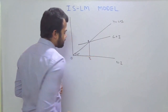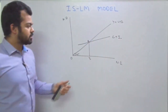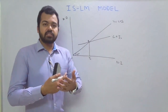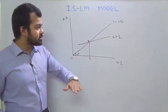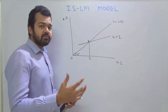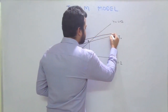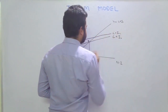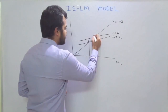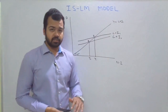Due to easy money policy or easy credit availability, investment goes up to give us C plus I1. This results in a new equilibrium E1 with higher income Y1. As we saw in the investment demand diagram, reducing the interest rate increases investment.